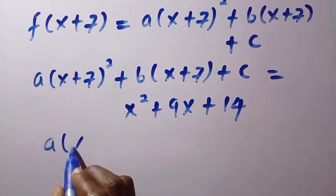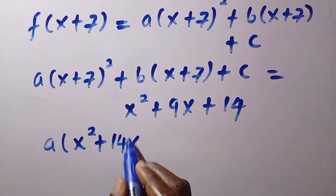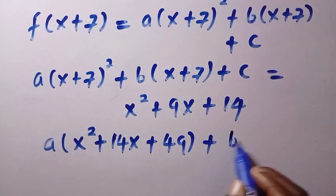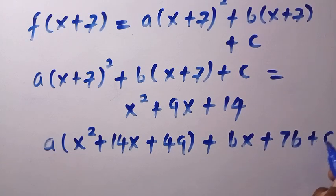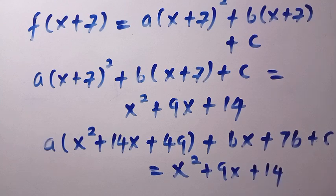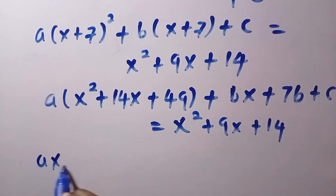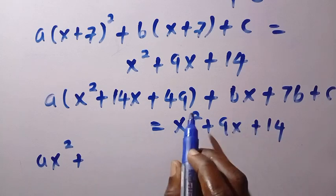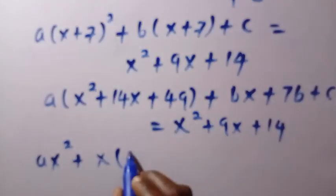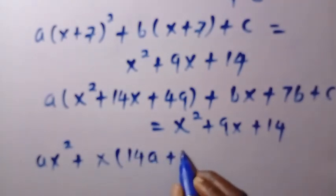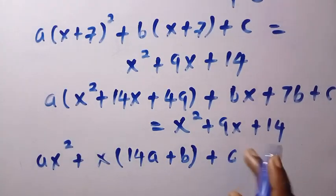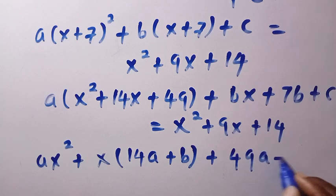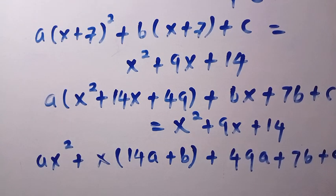When we expand this, we have a into bracket of x squared plus 14x plus 49. Then plus, this is bx plus 7b then plus c. Everything equals to x squared plus 9x plus 14. And taking this out, we are going to have a x squared plus x into bracket of 14a plus b. And also, the constant times here, which is, we have 49a plus 7b plus c. Everything equals x squared plus 9x plus 14.